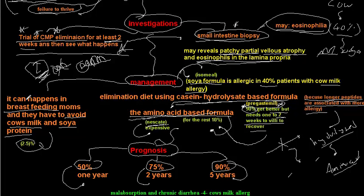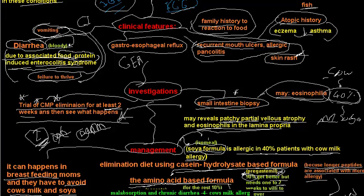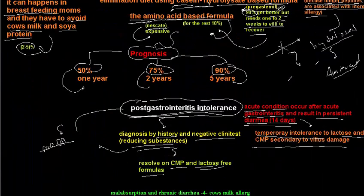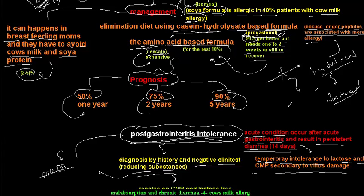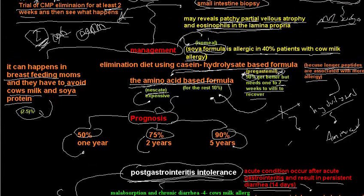There is also soya formula, such as Isomil. However, soya formula is allergenic in about 40% of patients with cow's milk protein allergy — meaning there is a 40% cross-concordance between cow's milk protein allergy and soya protein allergy. Therefore, whether to try soya formula first is debated.